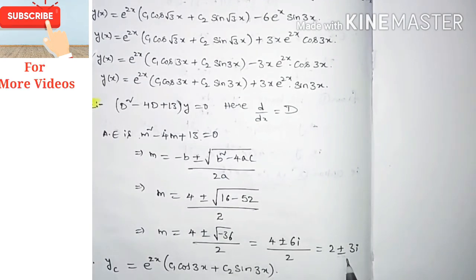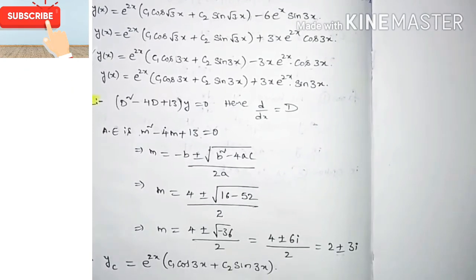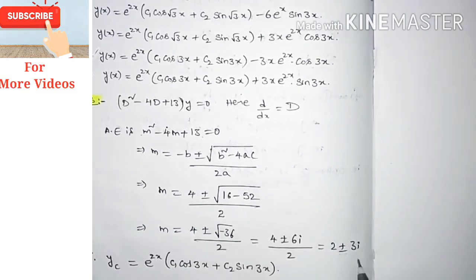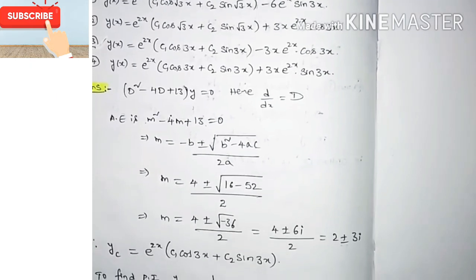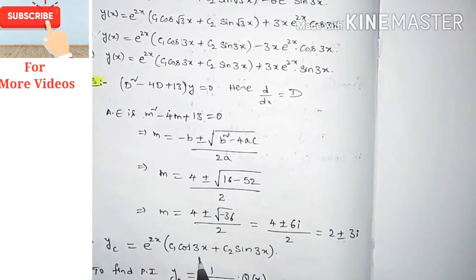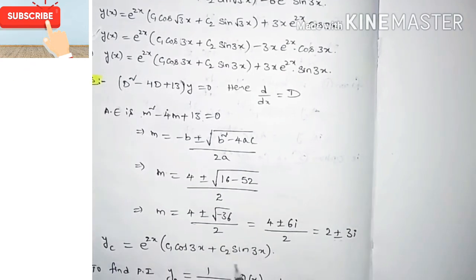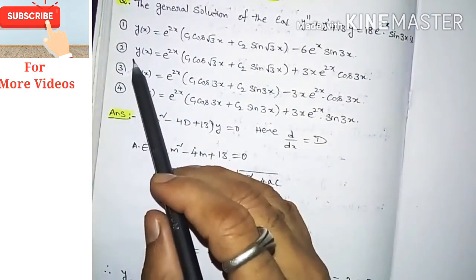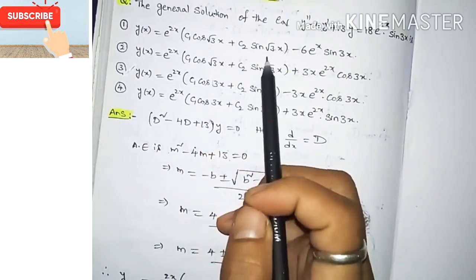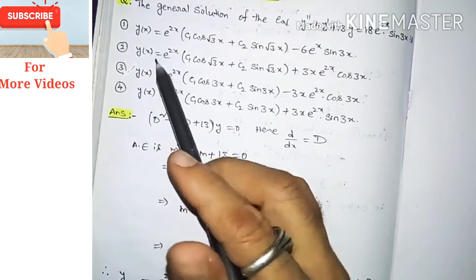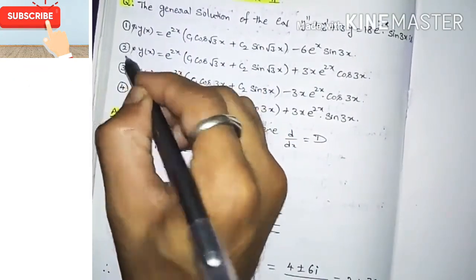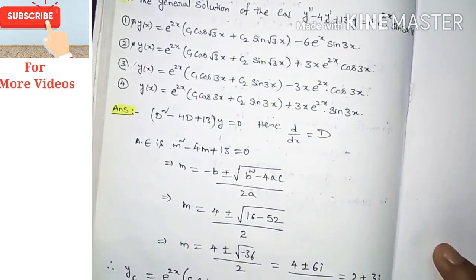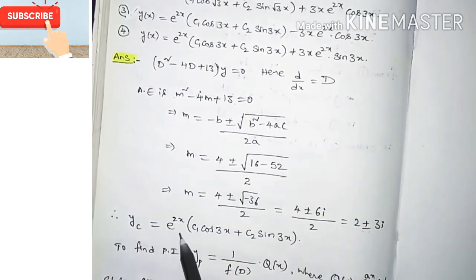Since we have complex conjugate roots, the complementary function yc is given by the formula e^(ax)·[c1·cos(bx) + c2·sin(bx)], where a = 2 and b = 3. So yc = e^(2x)·[c1·cos(3x) + c2·sin(3x)]. From this we can discard options 1 and 2, since they contain cos(√3x) and sin(√3x) instead of cos(3x) and sin(3x). We need to verify options 3 and 4.